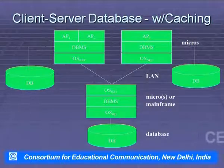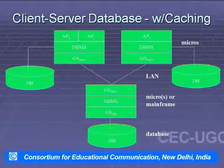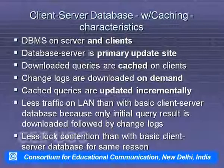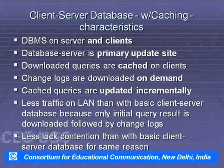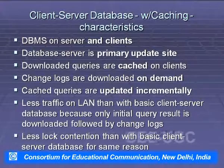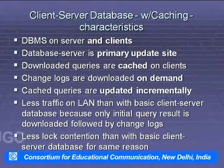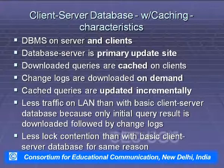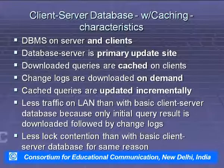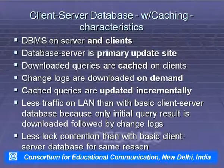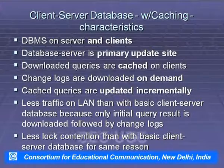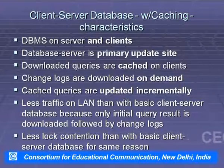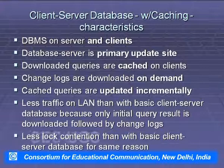In the client-server caching database, DBMS resides on both server and clients. The database server is primarily the update site. Downloaded query results are cached on the client; cached queries are updated incrementally. There is less traffic on the LAN than with the basic client-server database because only the initial query result is downloaded, followed by change logs. Lock contention is also reduced for the same reason.